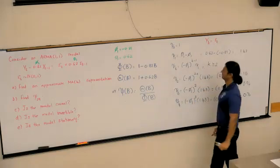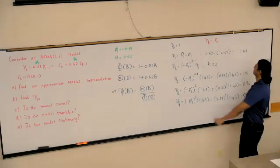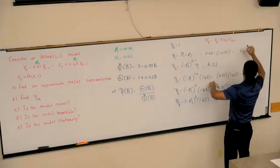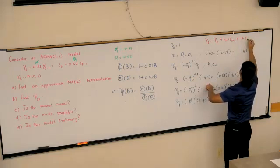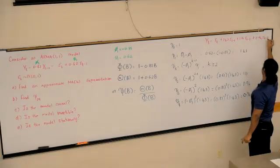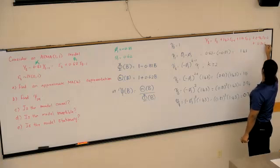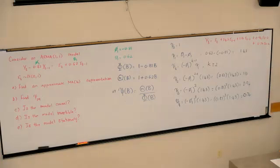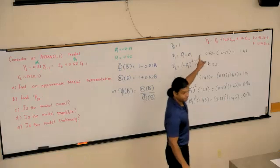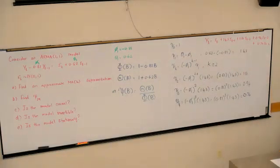We've got psi0, psi1, psi2, psi3, and psi4, which would mean Yt equals epsilon t, because psi0 is 1, plus psi1 epsilon t minus 1, plus psi2 epsilon t minus 2. The approximate MA(4) representation, it is not exact, approximate, because this would work exactly if I go all the way up to infinity, but we don't have time to do that.